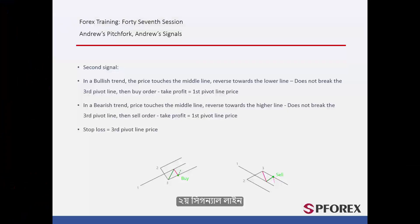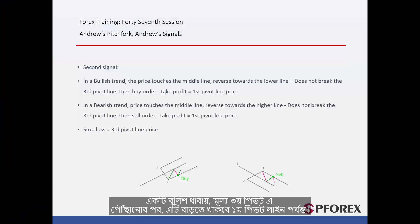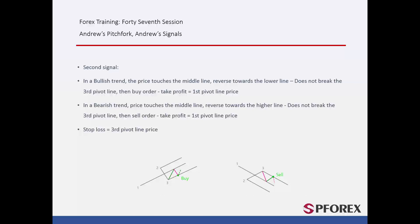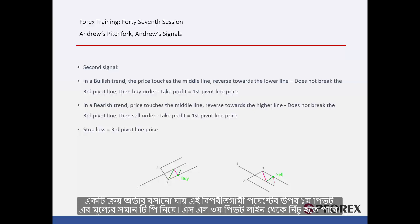The second signal model. In a bullish format, after the price has reached the third pivot, it will increase until the first pivot line. Then the price decreases towards the third pivot line again. But just before touching this line, it will change its direction. A sell order can be placed on this reversal point with TP equal to the first pivot price. SL can be lower than the third pivot line.